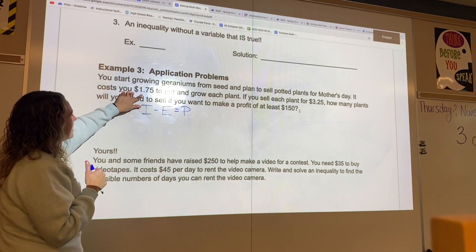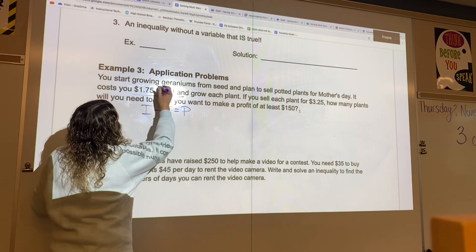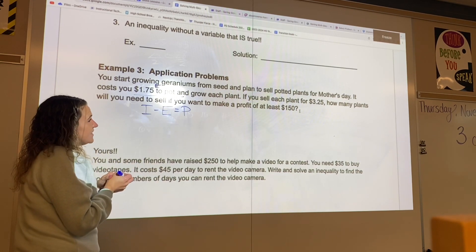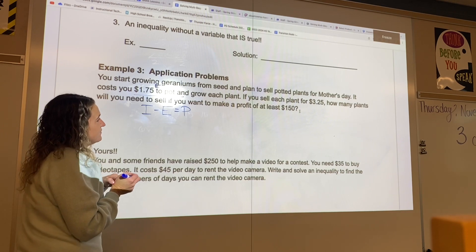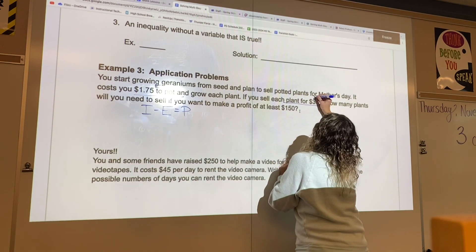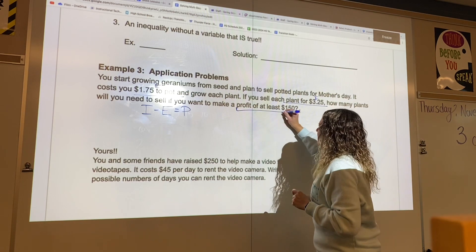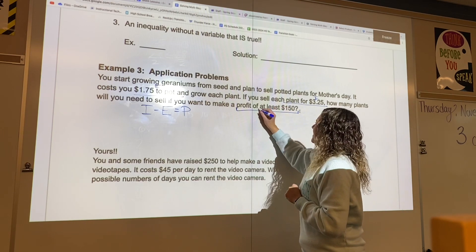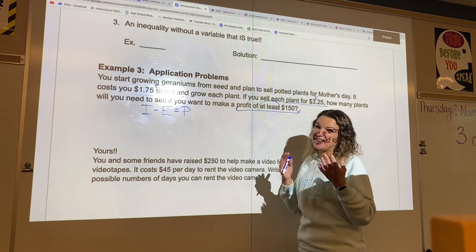So it costs you $1.75 to pot. That's going to be our expense. If you sell each plant for $3.25, that's going to be the income. Here's our income. And we want to make a profit of at least $150. And that at least is what tells us that we need to use an inequality.